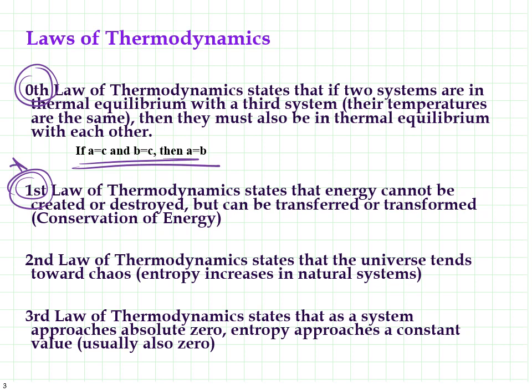The first law of thermodynamics is the one we're going to talk about the most in chemistry. Just like we have a law of conservation of matter — matter can neither be created nor destroyed — we have the law of conservation of energy. Energy can neither be created nor destroyed. We can transfer it and we can transform it, but we cannot create or destroy it. The second law of thermodynamics states that everything tends toward chaos — entropy increases in natural systems. That's disorder.